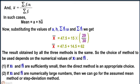If xi and fi are numerically large numbers, then we can go for the assumed mean method or step deviation method.